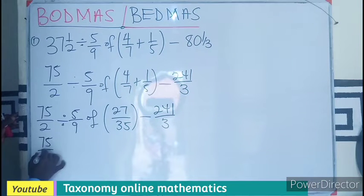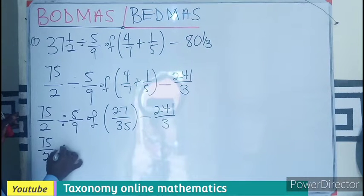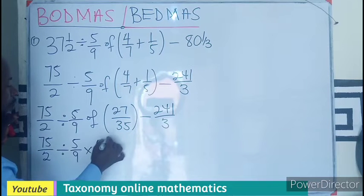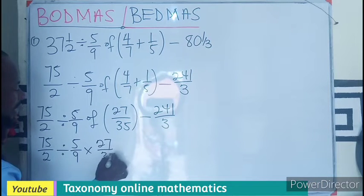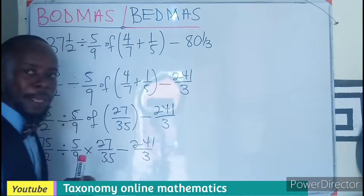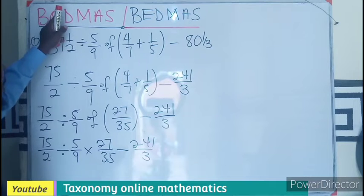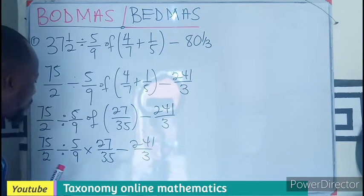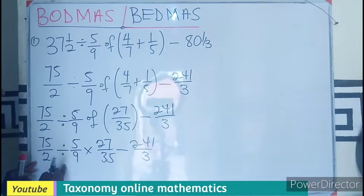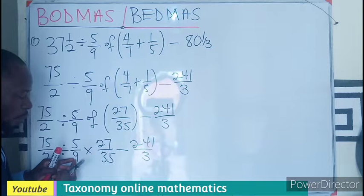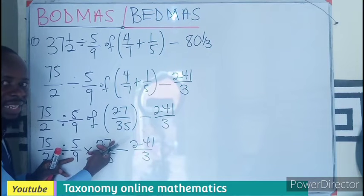So I have 75 over 2 divided by 5 over 9 times 27 over 35, minus 241 over 3. We are done with our 'of'. We are now moving to division if there is division.